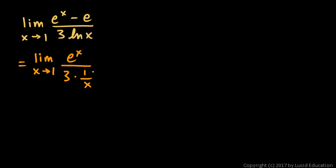In the denominator we have 3 times the derivative of the natural log of x, which is 1 over x. And then as x approaches 1, this is just going to be e to the 1, which is e, over 3 times 1. So that's the answer: e over 3.